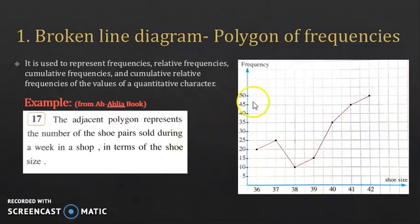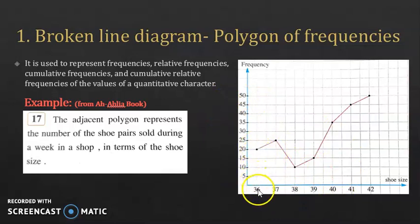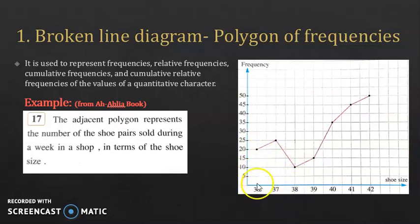What matters for us in reading this graph are the points, and not the values between them. So we're only concerned about the values 36, 37, 38 — and not any value between these, for example.